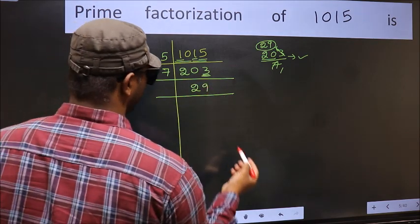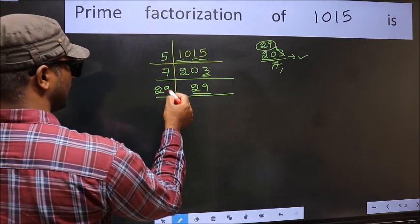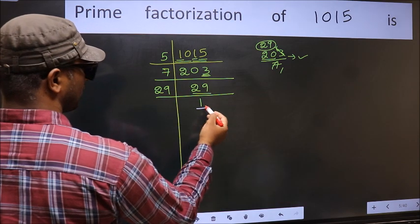Now, we have 29. 29 is a prime number, so 29 once 29. So, we got 1 here.